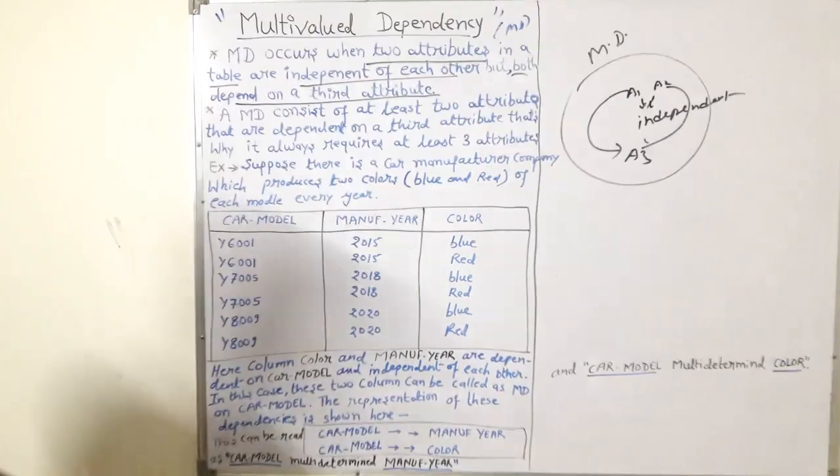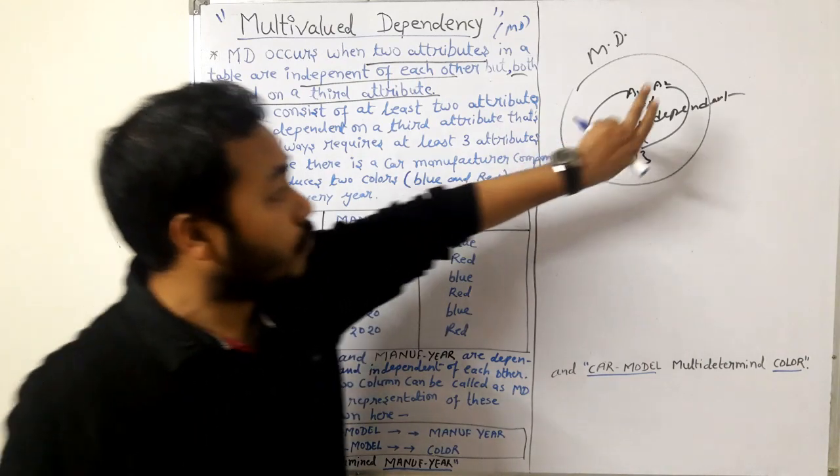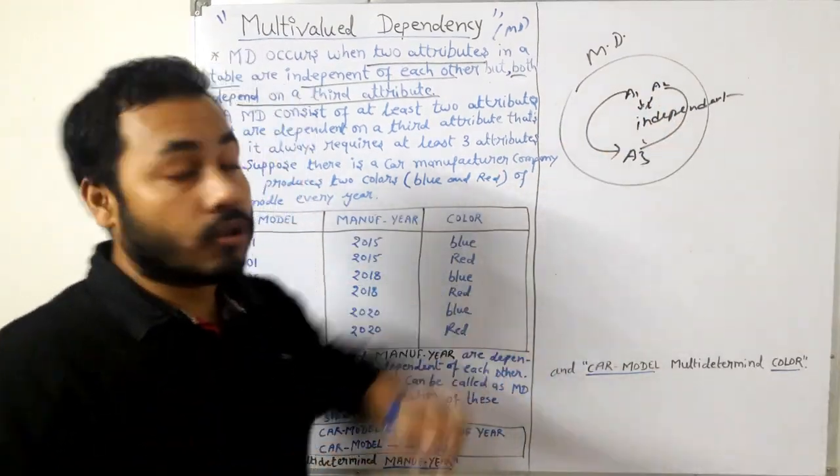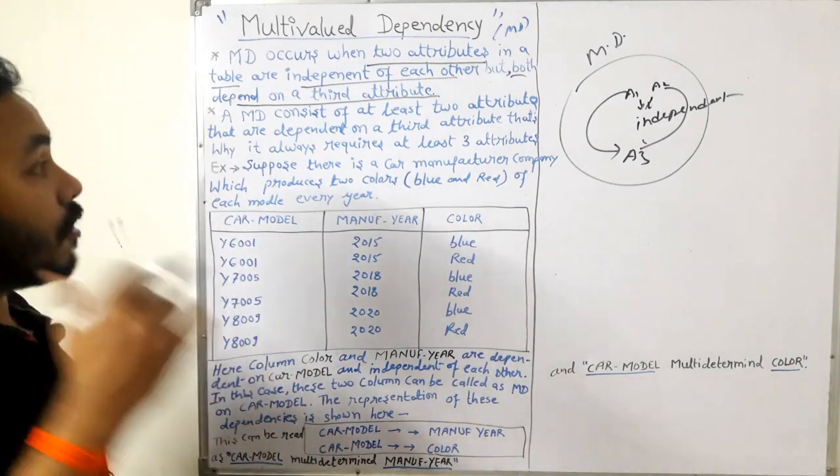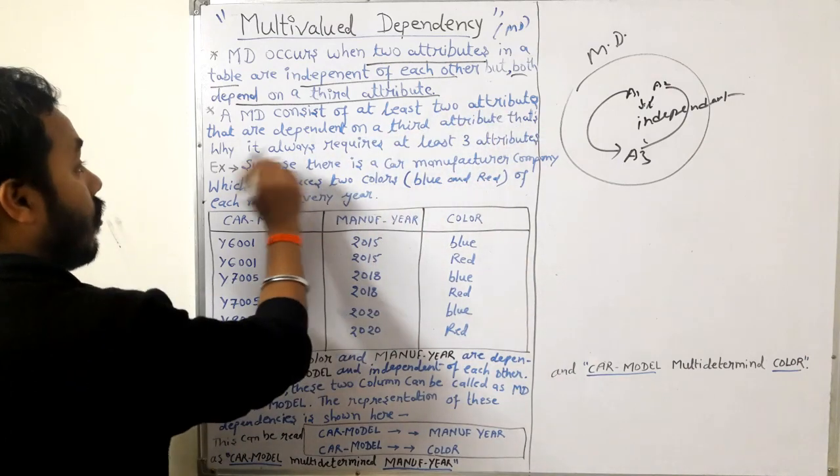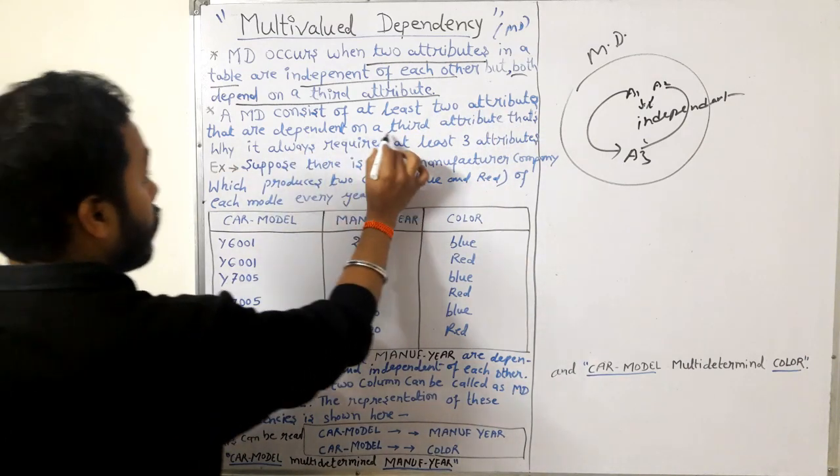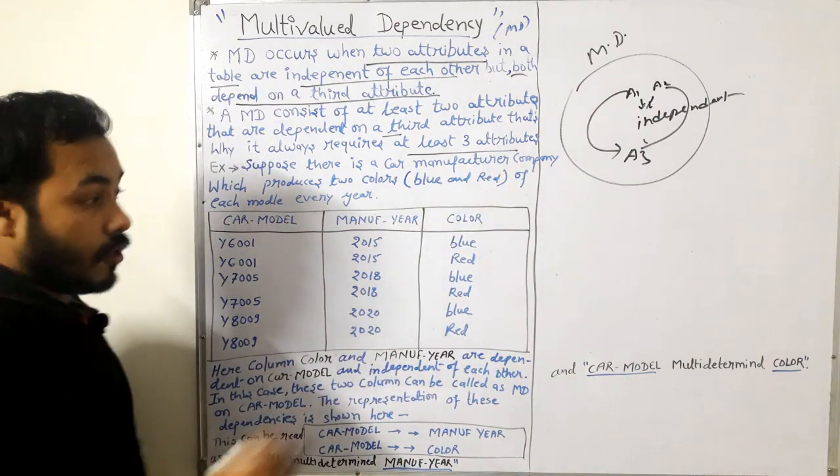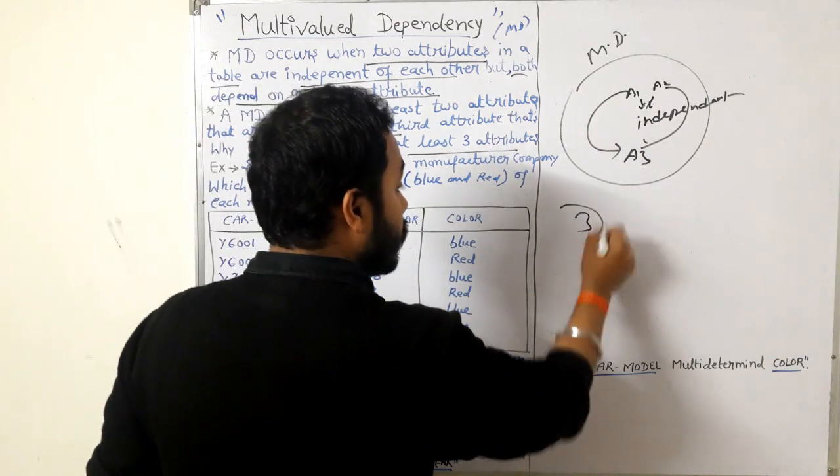As we have seen, there should be two attributes which are independent of each other. Multi-valued dependency occurs when there are at least two attributes and they are dependent on a third attribute. So there should be at least how many attributes? I have used the term 'at least.'